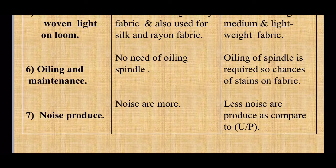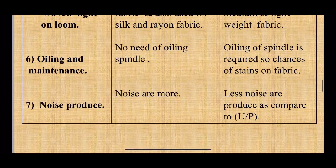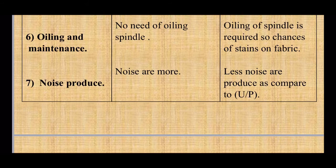Regarding chances of oiling during maintenance: in underpick, no spindle is used, so there is no need for oiling and chances of fabric staining are avoided. In overpick mechanism, a spindle is used on which the picker travels to force the shuttle from one side to the other, so this spindle must be oiled regularly, creating chances of oil stains on the fabric, which is considered a defect. Noise production is more in underpick looms compared to overpick looms.